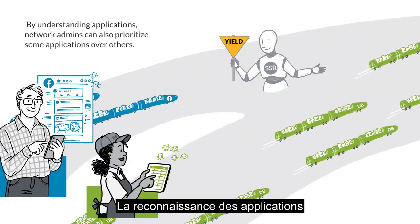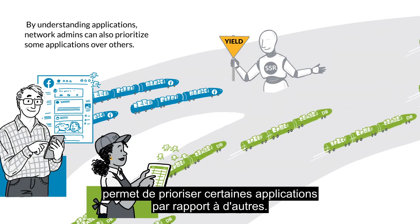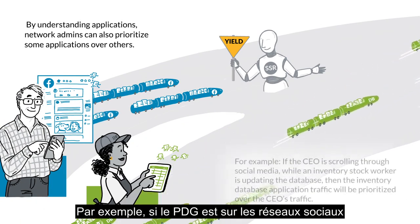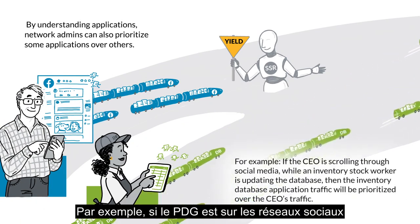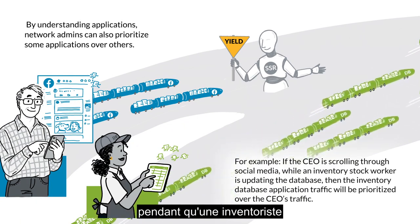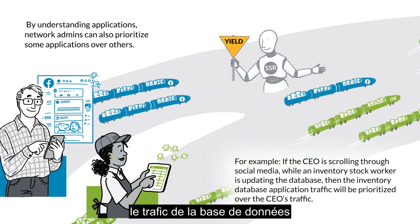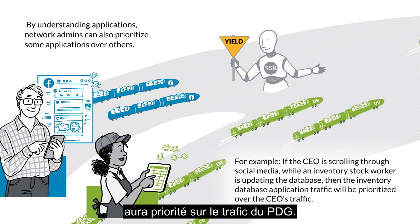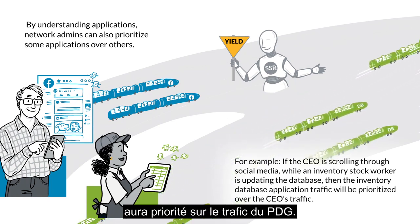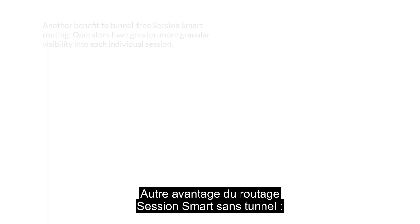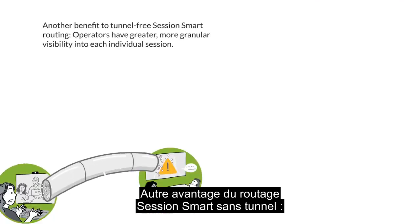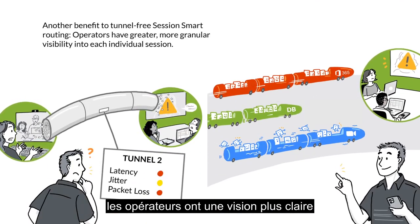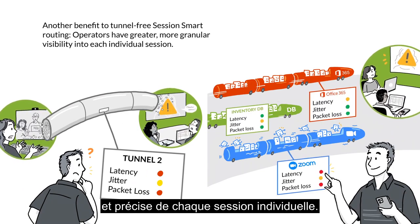By understanding applications, network admins can also prioritize some applications over others. For example, if the CEO is scrolling through social media while an inventory stock worker is updating the database, then the inventory database application traffic will be prioritized over the CEO's traffic. Another benefit to tunnel-free session smart routing: operators have greater, more granular visibility into each individual session.